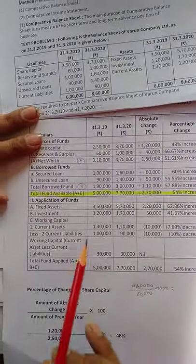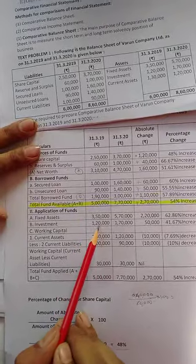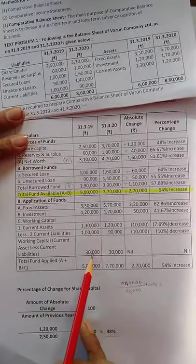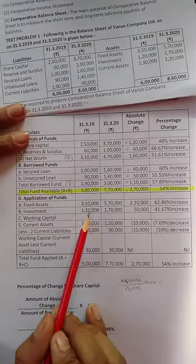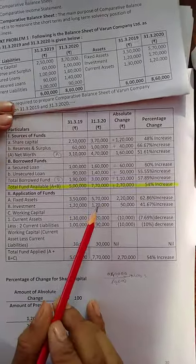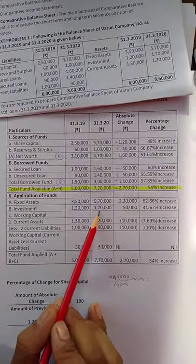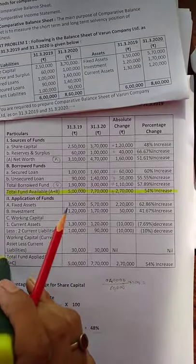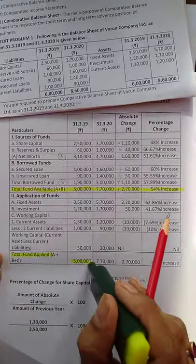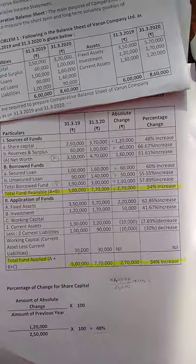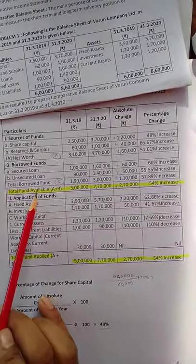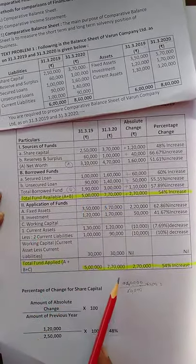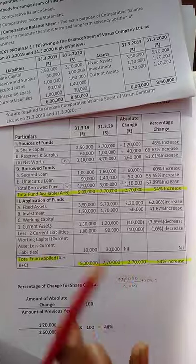Total fund applied equals fixed assets plus investment plus working capital: 3,50,000 + 1,20,000 + 30,000 = 5,00,000 for 2019. For 2020: 5,70,000 + 1,70,000 + 30,000 = 7,70,000. Agar aap dekhenge, total fund applied aur total fund available dono ka total same hai — 5,00,000 aur 7,70,000 — increase 2,70,000.